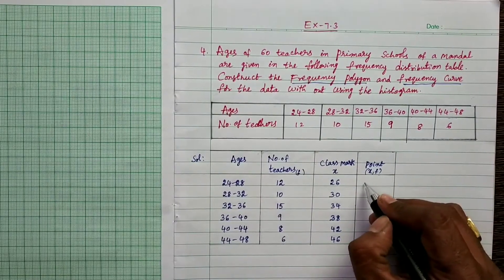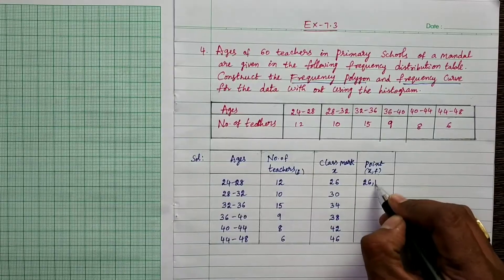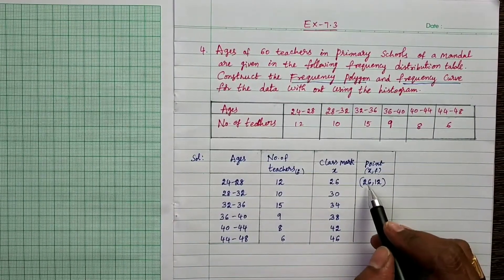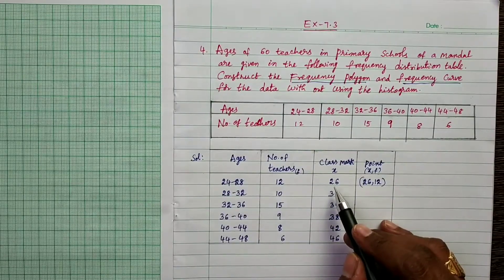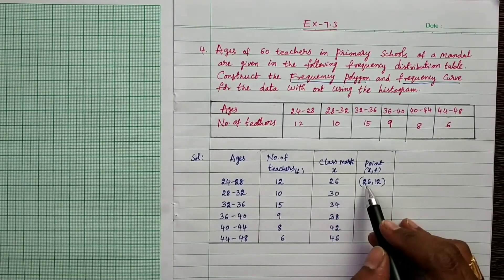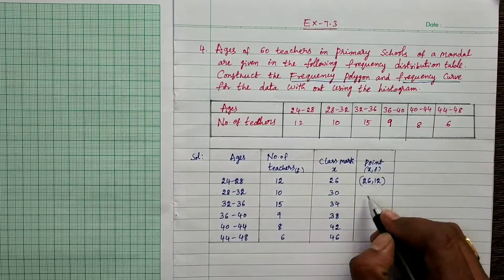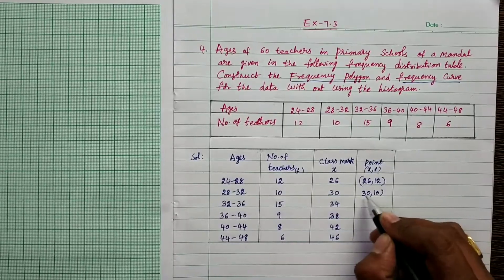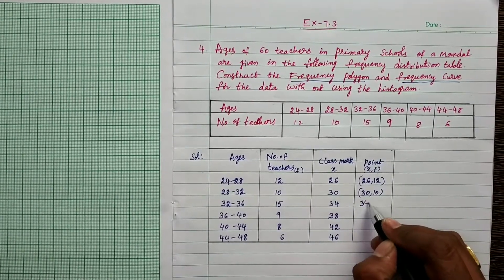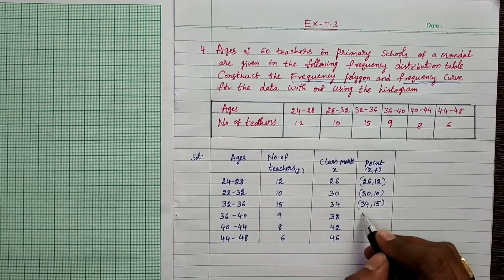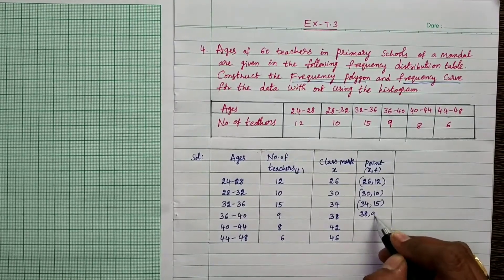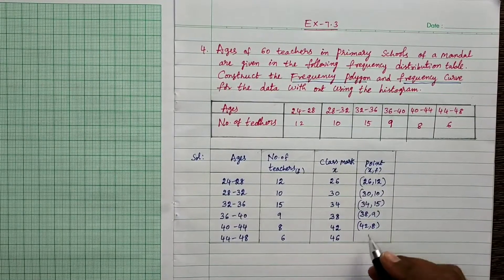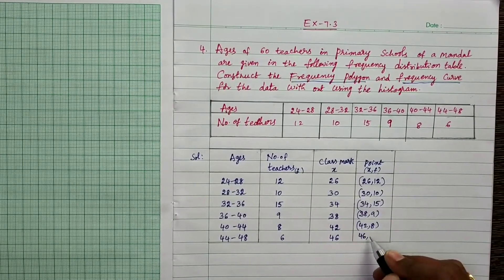The data points are: (26, 12), (30, 10), (34, 15), (38, 9), (42, 8), and (46, 6). The given condition is to construct the frequency polygon and frequency curve without using a histogram.